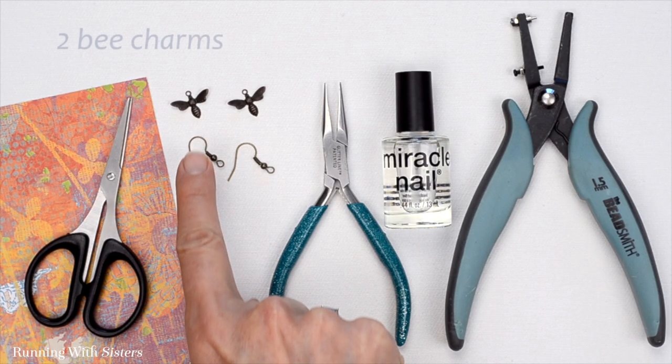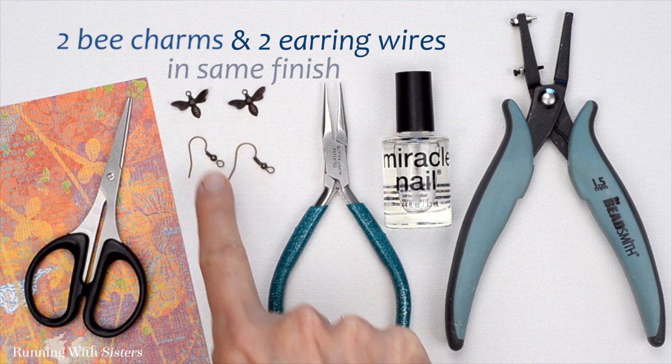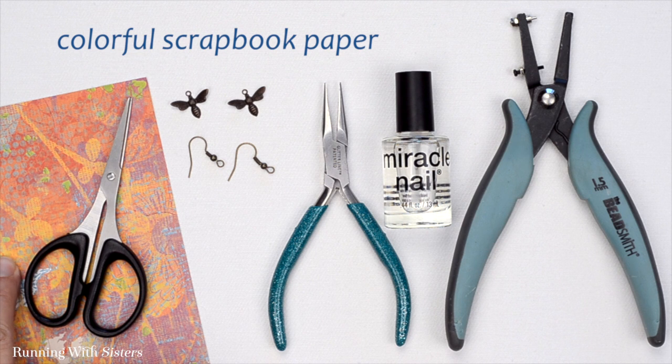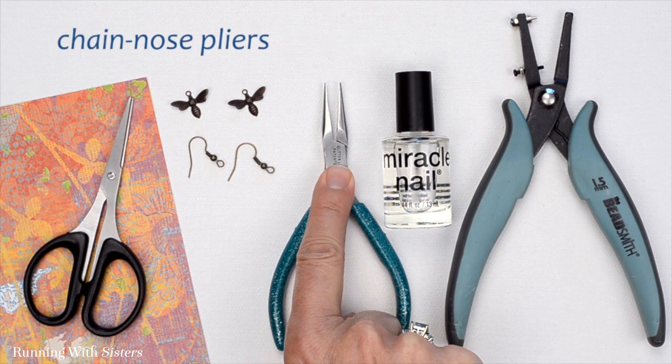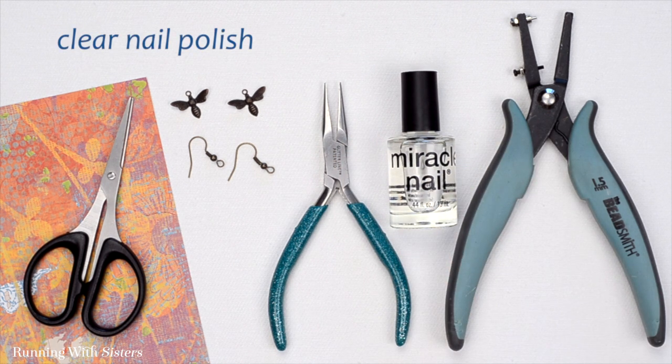To make the paper earrings, you'll need two bee charms and two earring wires in the same metal finish. You'll need a pretty piece of scrap paper, scissors, chain nose pliers, a metal hole punch, and finally you need clear nail polish.